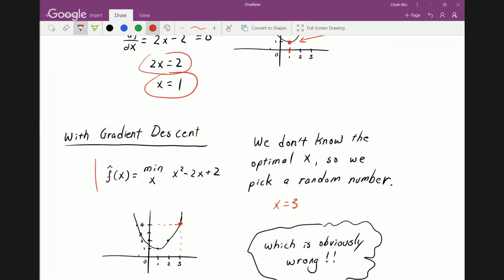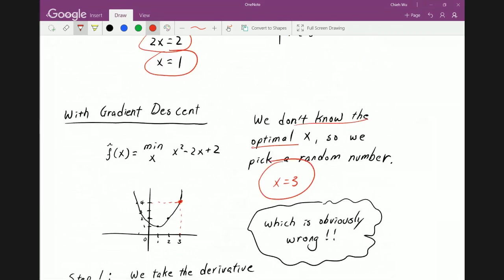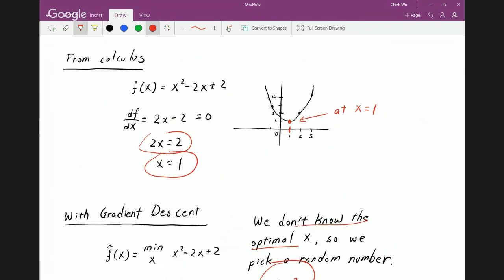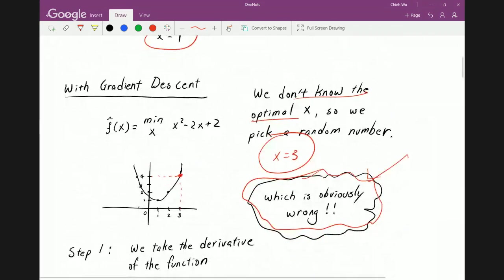First, we write the formulation. This is what we're trying to solve. And we assume that we don't know what x is. So we'll just pick a random one, 3, which is obviously wrong because you can see from here, 3 is not the minimum. So with gradient descent, the idea is you pick something wrong or just pick something randomly, and then little by little, you inch towards the right answer. That's the general idea.